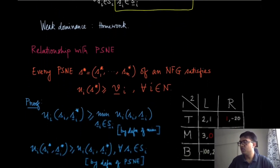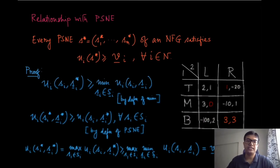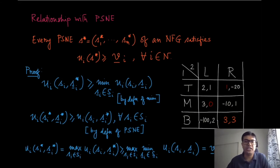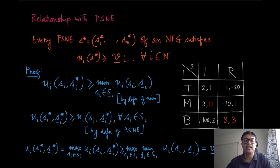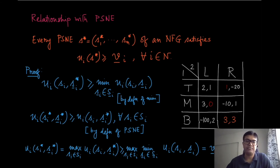Now let us look at the pure strategy Nash equilibrium and what relationship it has with the maximin value. This claim says that if you have a pure strategy Nash equilibrium in a normal form game, then the utility of every player at that Nash equilibrium strategy profile must be at least as much as the maximin value. So by playing a pure strategy Nash equilibrium you are still safe — you will always have at least the maximin value that you could have achieved by being pessimistic.